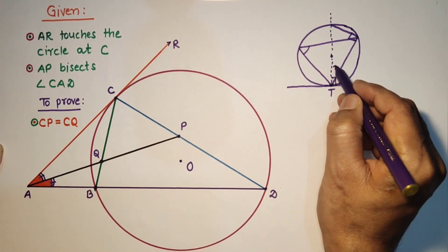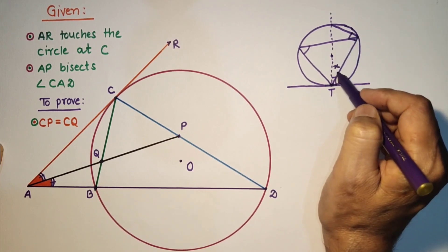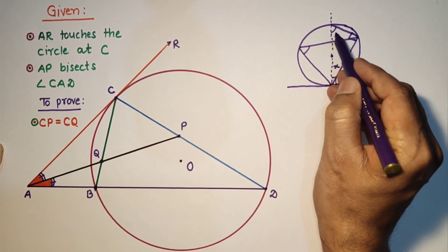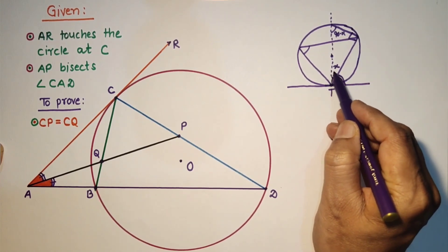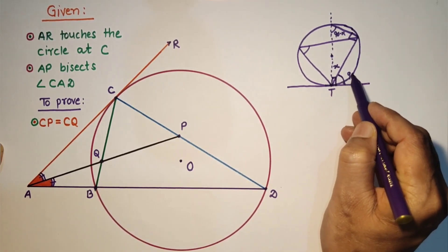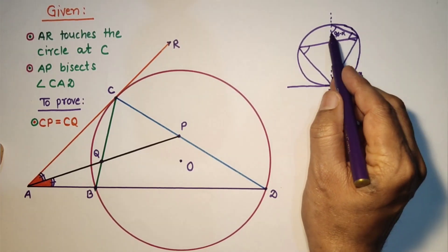If this angle is X, so this is 90 and this is X assumed, so this will be 90 minus X. And since this is 90, this part is X, so this remaining is 90 minus X. So this is 90 minus X, this is 90 minus X.